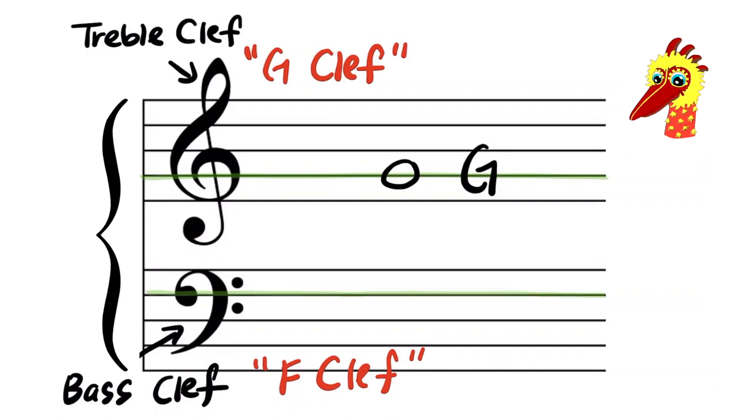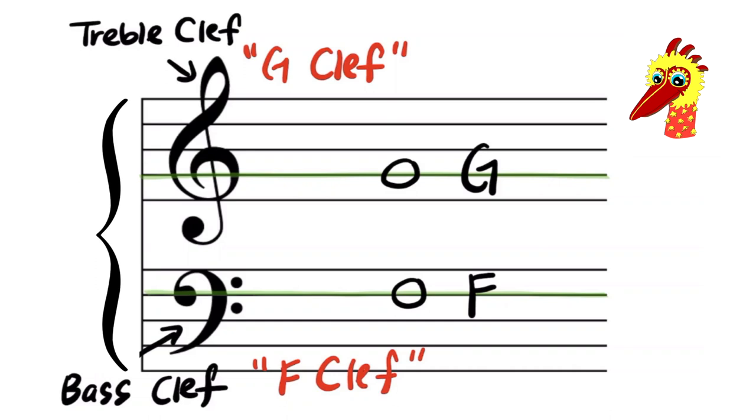The bass clef, also known as the F clef, meets most on line 4, which makes F the landmark note. In a bass clef, this note will always be F. Okie dokie, artichoke.